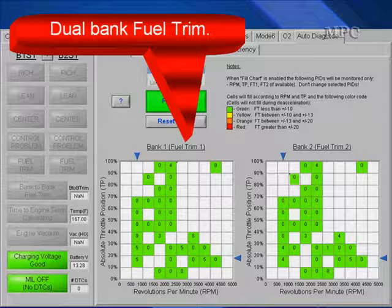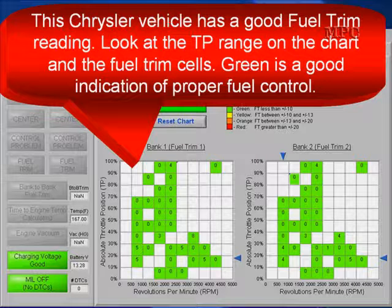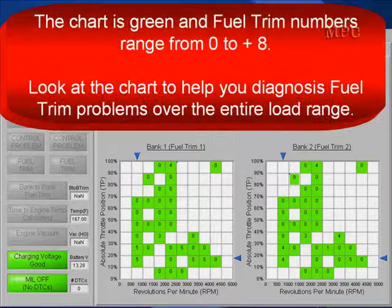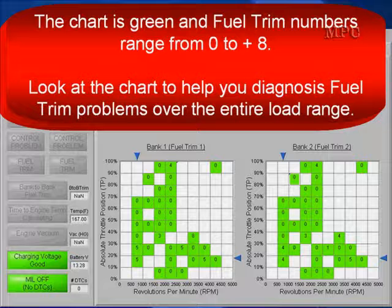On the one on the left, there's an eight in there at 3,000 to 3,500 RPM at 30% to 40% throttle, but I wouldn't worry about that — these are two perfect banks. This Chrysler vehicle has good fuel trim. When we look at the TP ranges on the chart, green is good, yellow means we're having a problem, orange is a greater problem, and red means something's bad — go fix it. The chart is green on these, ranging from zero to eight. Use the color codes to help you diagnose per fuel trim cell.